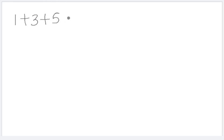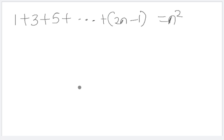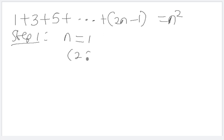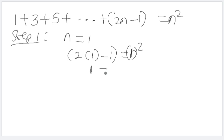Now let's look at some examples. The first one: show that one plus three plus five plus ... plus (2n minus one) is equal to n squared. For step one, we check if it is true for n equals to one. Two times one minus one gives us one, and one squared is one, so one equals one. This is true.